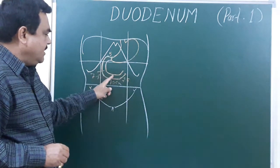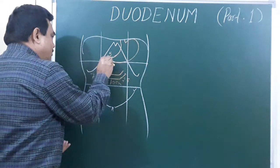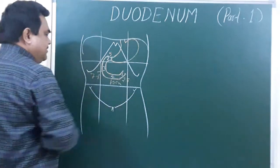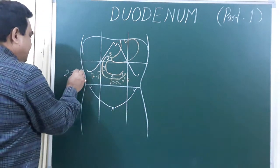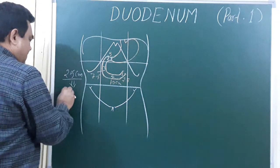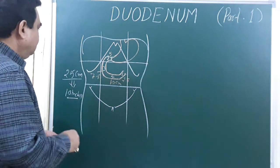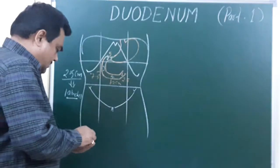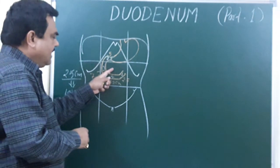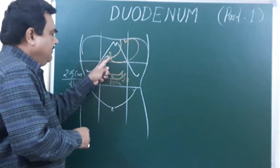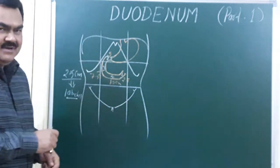So in inches, the first part is 2 inches, second is 3 inches, third is 4 inches, and fourth is 1 inch. The total length of the duodenum is about 25 centimeters. Regarding its location, the duodenum lies partially in the epigastric region and mostly in the umbilical region.